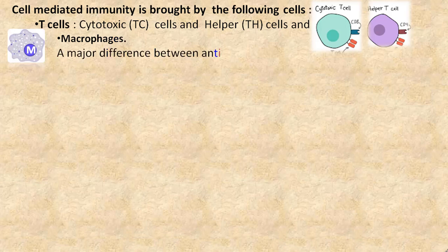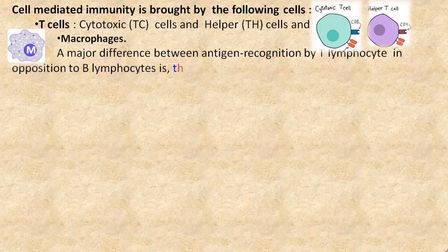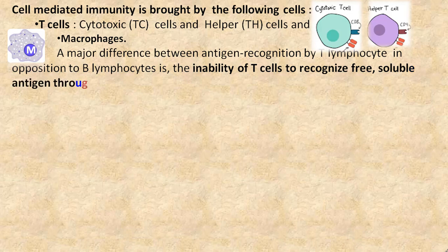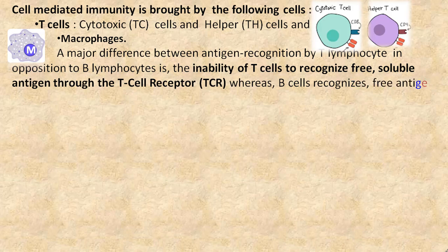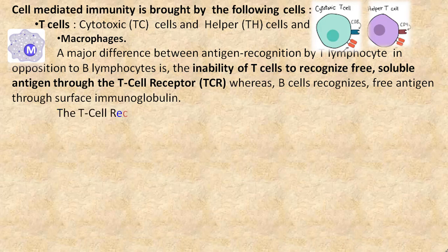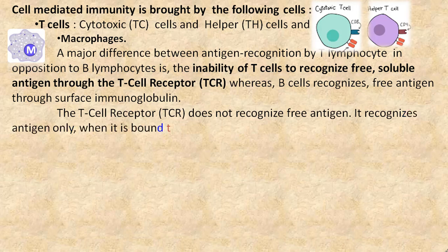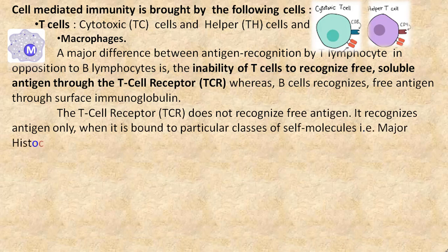A major difference between antigen recognition by T lymphocytes in opposition to B lymphocytes is the inability of T cells to recognize free soluble antigen through the T cell receptor, whereas B cells recognize free antigen through surface immunoglobulin. The T cell receptor does not recognize free antigen; it recognizes antigen only when it is bound to particular classes of cell molecules, that is major histocompatibility complex (MHC) molecules.